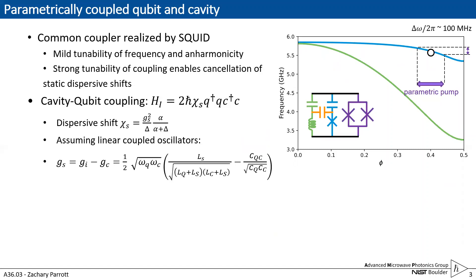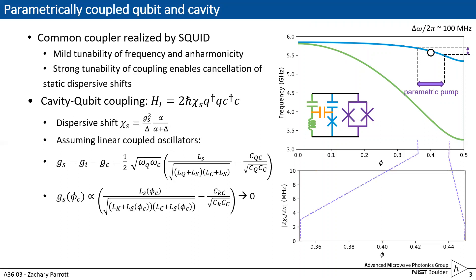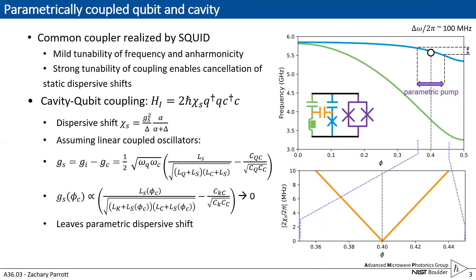If we assume that these are linearly coupled oscillators to first order, then G is the difference of the inductive coupling and the capacitive coupling, but our inductive coupling is tunable with the SQUID flux. Thus, because it's a difference, we'll find an operating point where these interactions cancel out and we'll have zero static dispersive shift. This gives us an operating point upon which to then apply our parametric drives, and they will be the only source of our interactions.